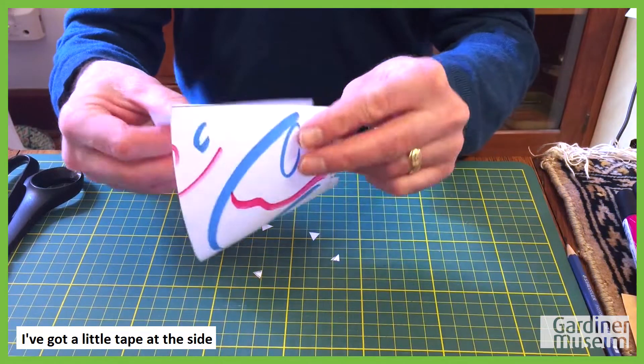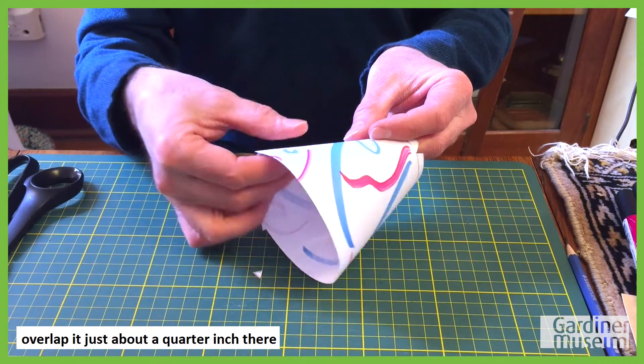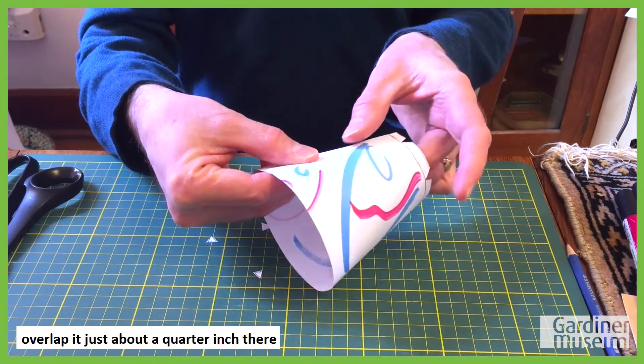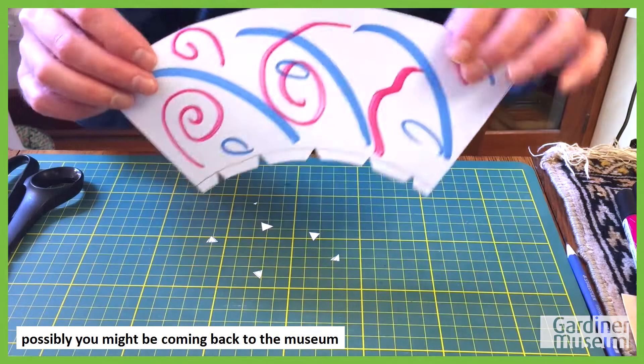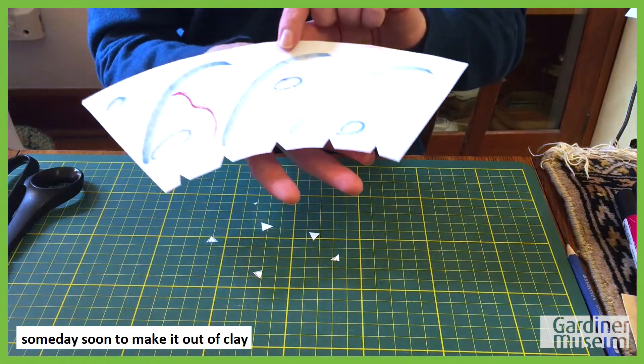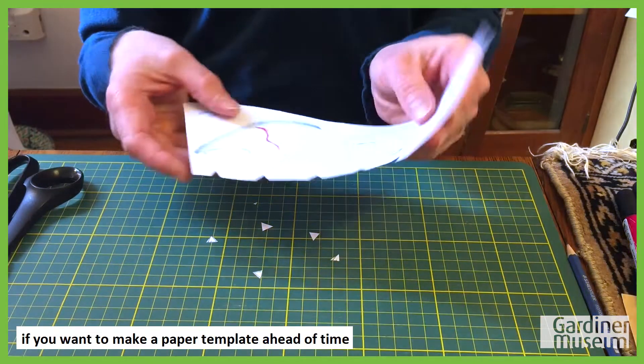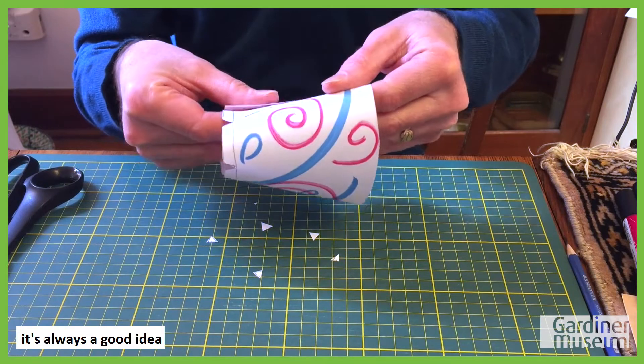I've got a little tape at the side and I'm going to roll this around. Overlap it just about a quarter inch there. Possibly, you might be coming back to the museum someday soon to make it out of clay. So you would need a piece of clay about this shape. If you want to make a paper template ahead of time, it's always a good idea.